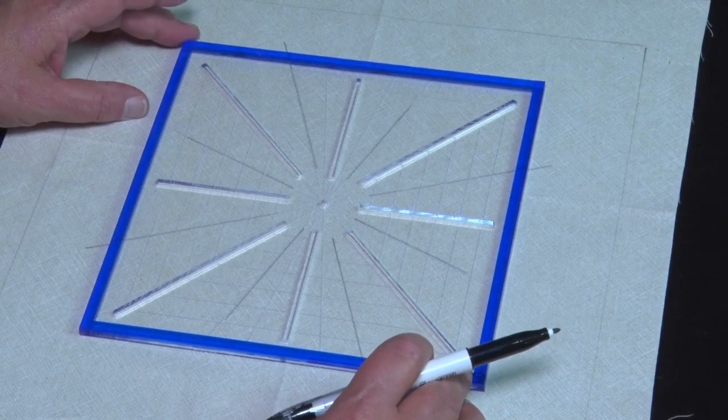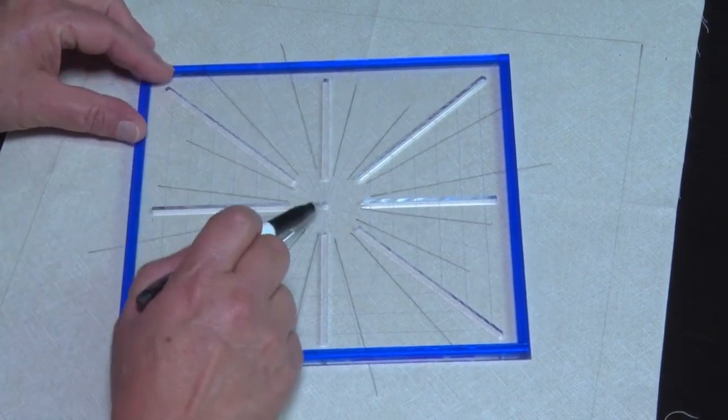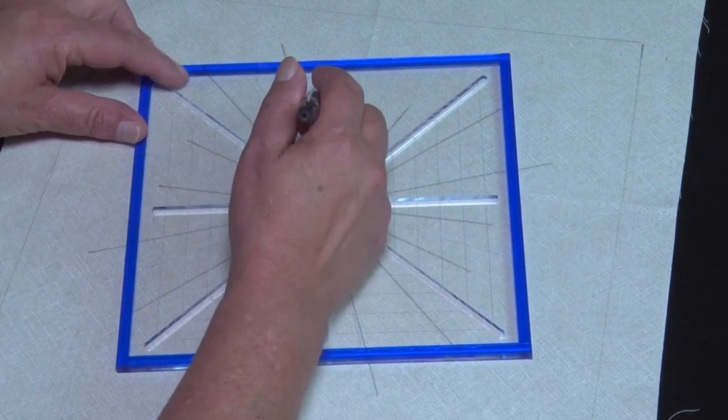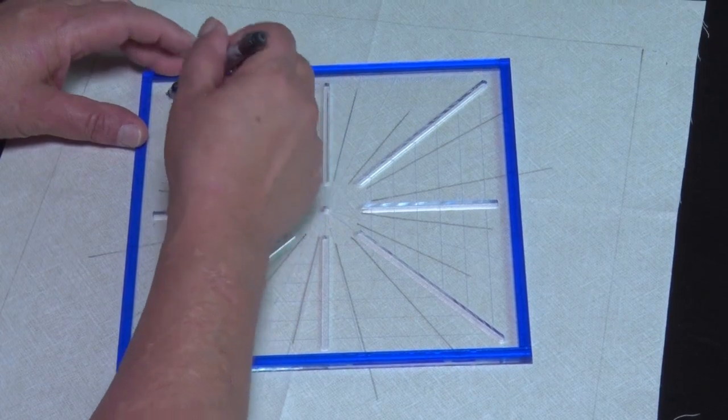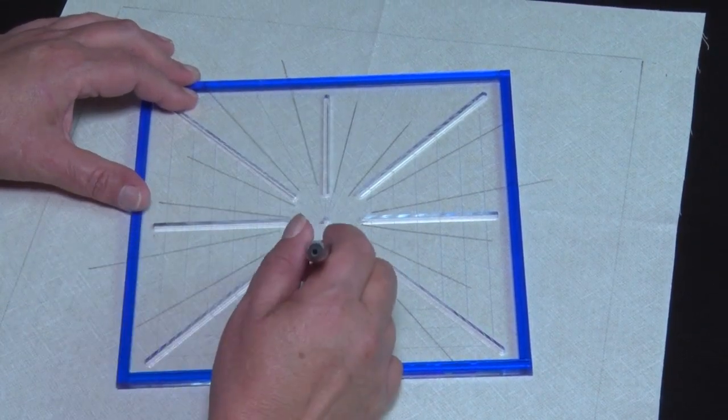And to make 32 reference lines, we are just going to line those reference lines up again. Make sure our center's in place. The reference lines are marked at both sides of the tool so that we can check it on both sides. Draw our lines in.